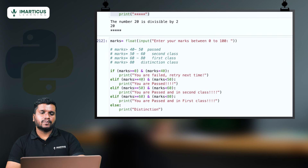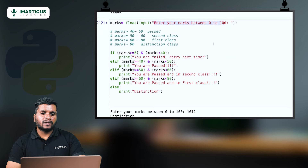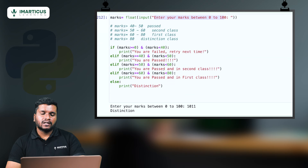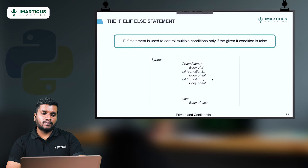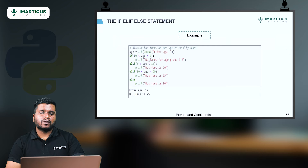We've seen the if-elif-else condition with the marks example. There's also an age-based bus fare example: 0 to 3 — no fare; 3 to 10 — 20 rupees; 10 to 20 — 25 rupees; otherwise — 30 rupees. Now, the problem in our marks program is that it still executes for values above 100. We can use nested if to solve this problem — nested if is an if statement within another if statement.